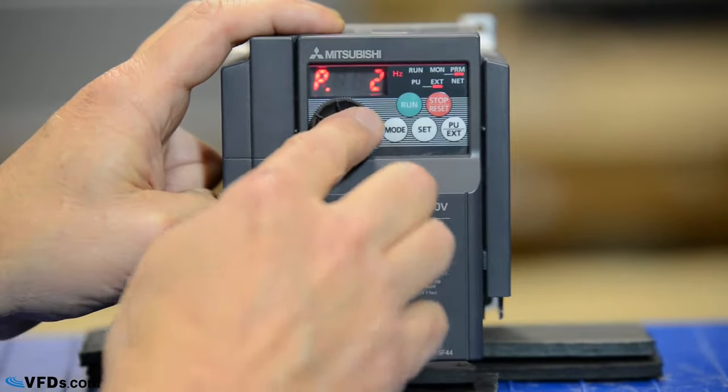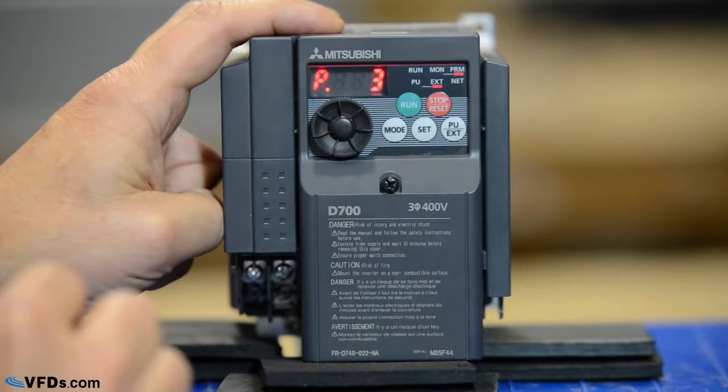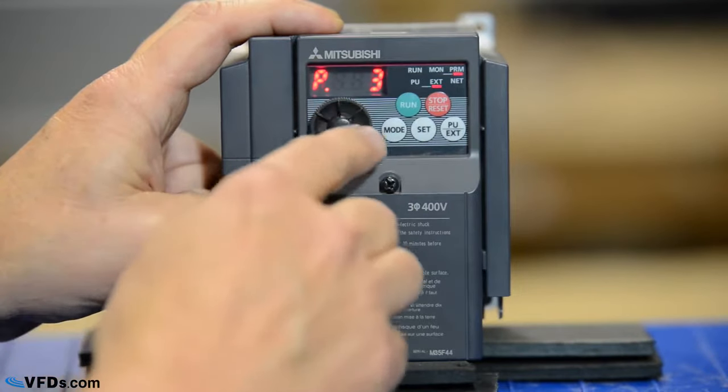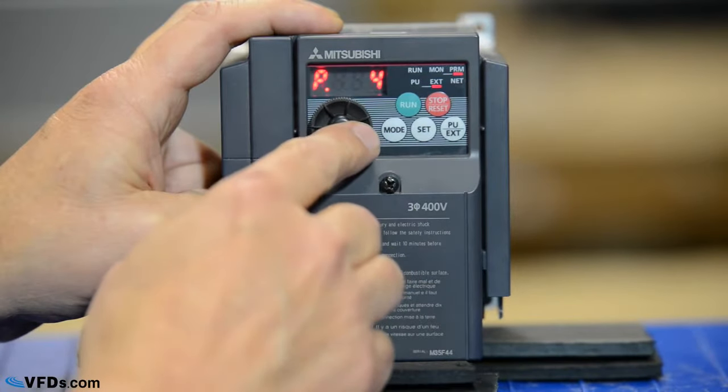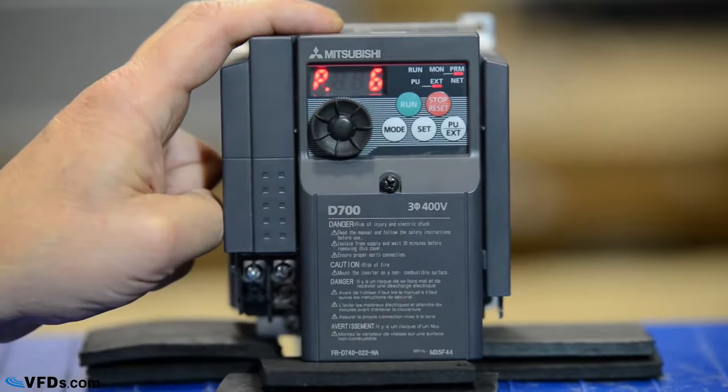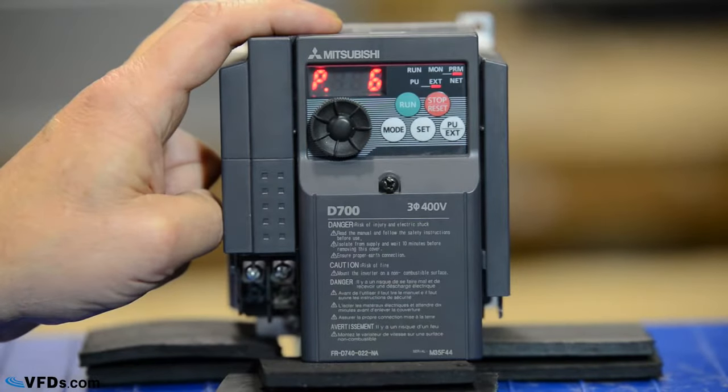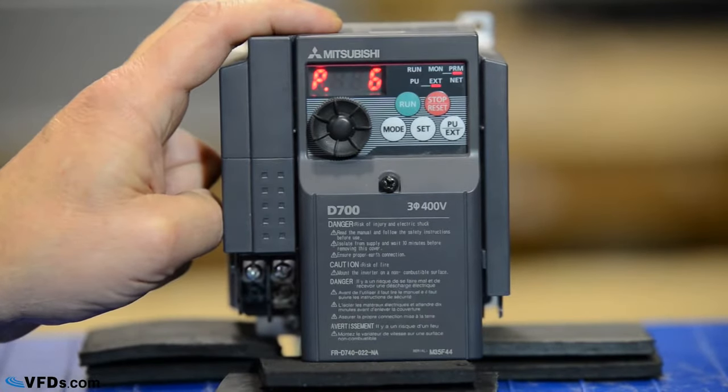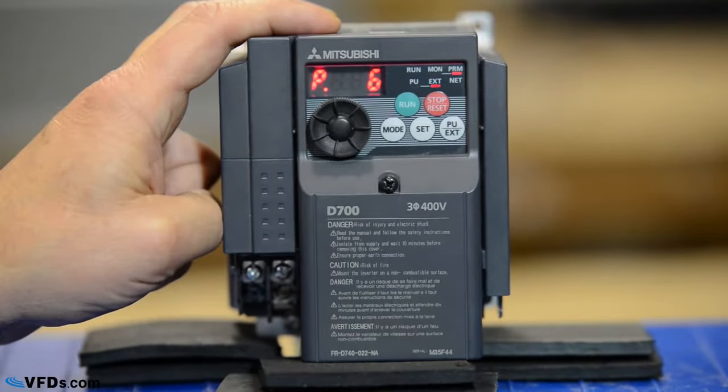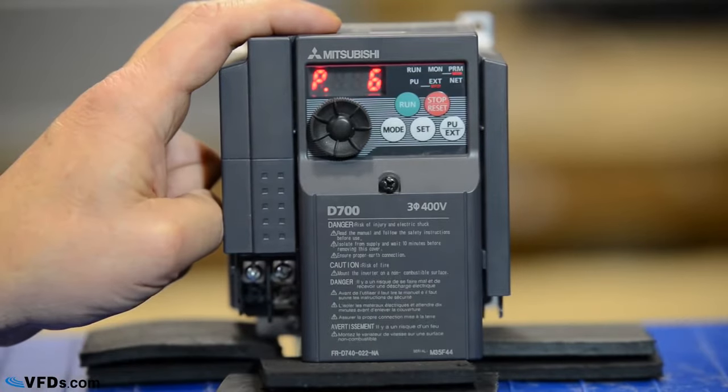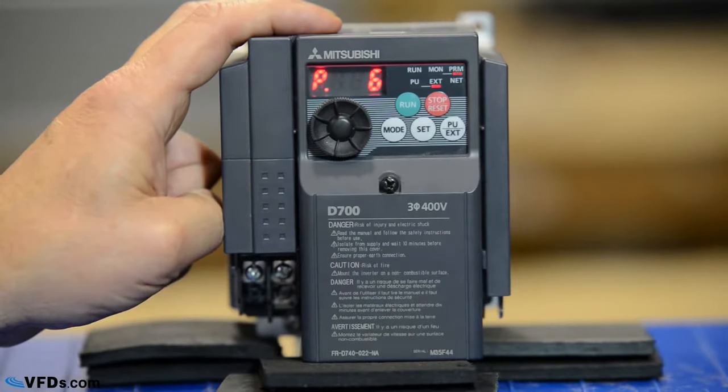I turn the wheel again and we go to parameter 3. That was our motor rated frequency—we've already set that. Here's parameters 4, 5, and 6. Those are preset speeds. If you'd like to run the drive at certain preset speeds, you may want to set one of those. Typically we're going to run the drive on an analog input or through the keypad, so we won't need to set those.